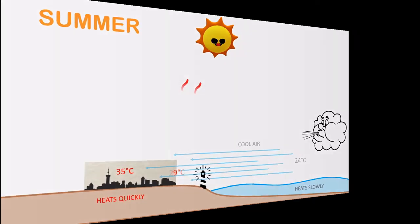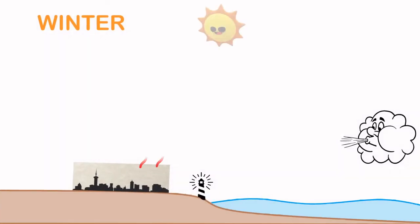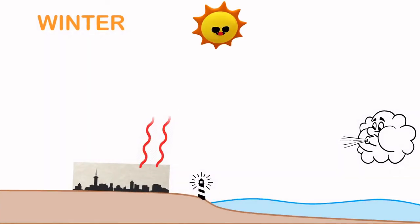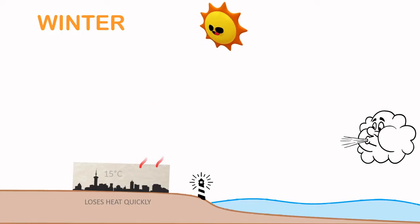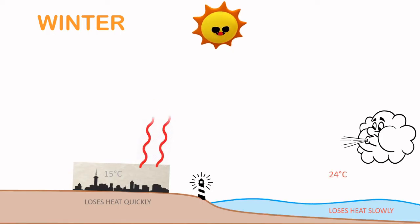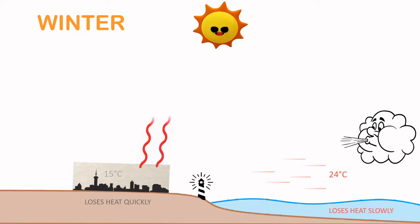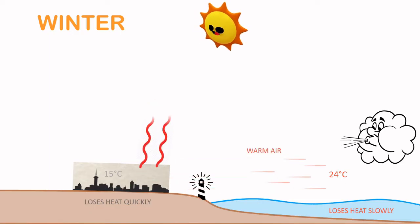In winter, the opposite process occurs. Because the land loses its heat very quickly, the air over the land cools quickly as well. The oceans, however, have lots of heat stored, which causes the air over the oceans to remain relatively warm. This warm air then flows over the land and warms the coastal temperatures, preventing them from getting too cold.